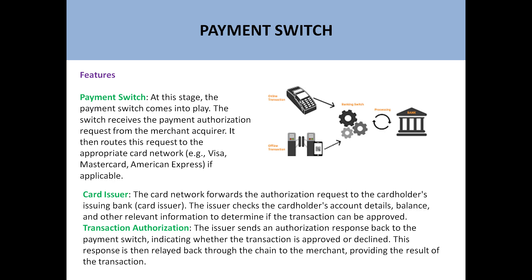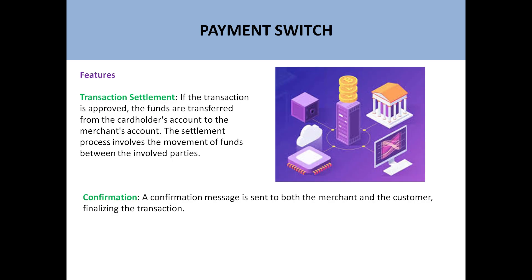Card issuer and authorization: the card network forwards the authorization request to the cardholder's issuing bank. The issuer checks the cardholder's account details, balance, and other relevant information to determine if the transaction can be approved. The issuer then sends an authorization response back to the payment switch indicating whether the transaction is approved or declined, and this response is relayed back through the chain to the merchant.